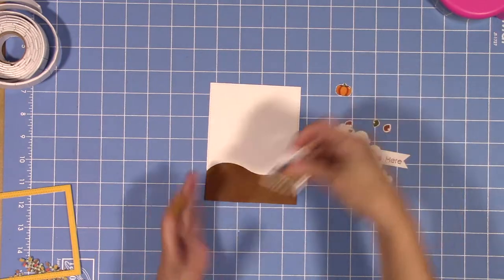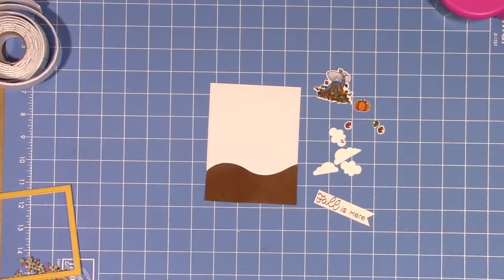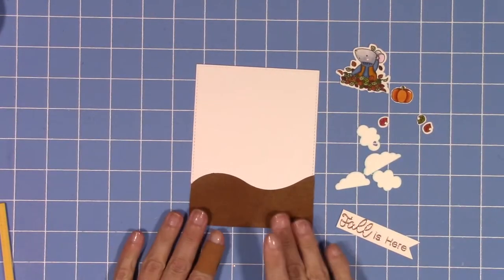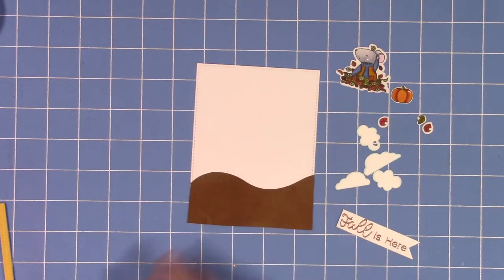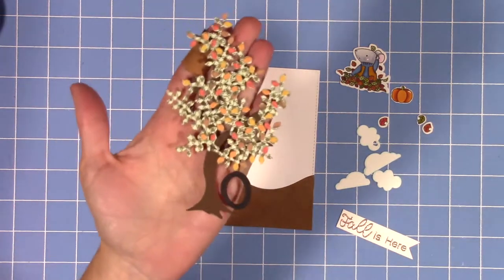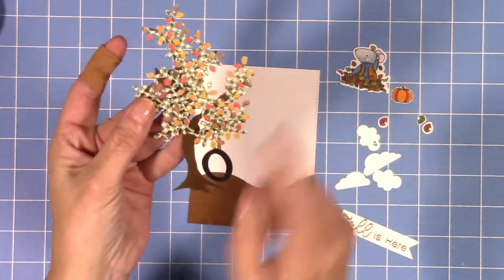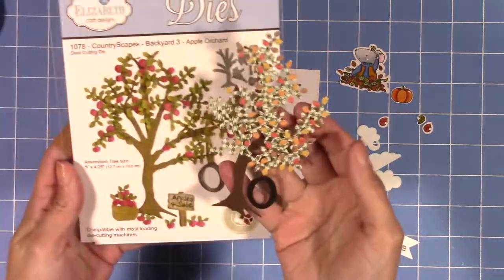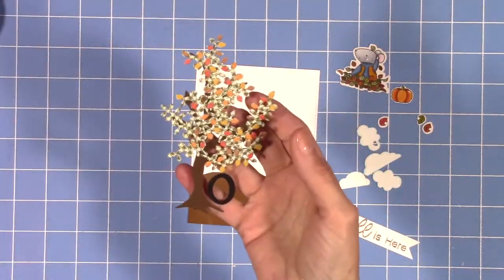I've already attached my ground to my base and I'm not going to do any little fluffy clouds on this one. I just edged them with a B000 copic marker to give it a little bit of color.